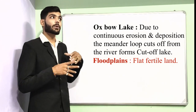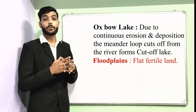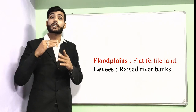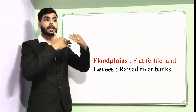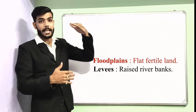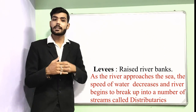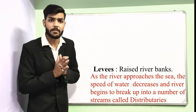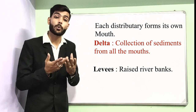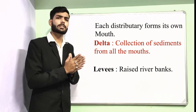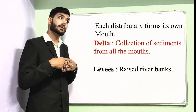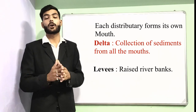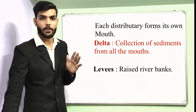Flood plains are flat, fertile land alongside a river. Levees are raised river banks — when the river banks build up many layers, they rise and are known as levees. As the river approaches the sea, the speed decreases and it breaks into a number of streams called distributaries. Each distributary forms its own mouth, and the collection of sediments from all the mouths forms the delta.